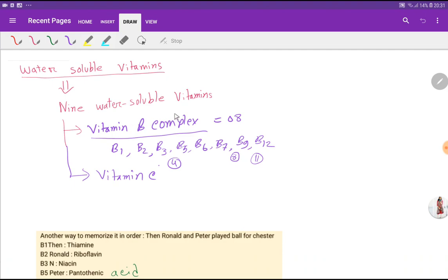There are basically nine vitamins which are soluble in water: vitamin C, which is non-B complex, and eight vitamins of the B complex group - B1, B2, B3, B5, B6, B7, B9, and B12. Look, after B3, B4 is missing; after B7, B8 is missing; and after B9, B10 and B11 are missing.